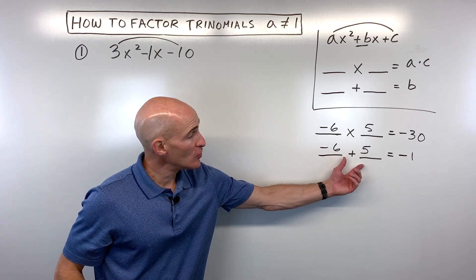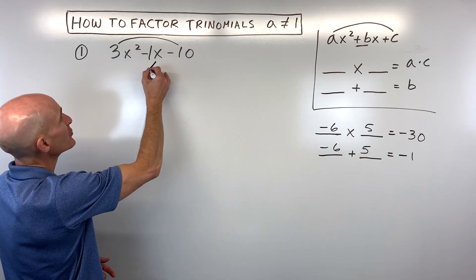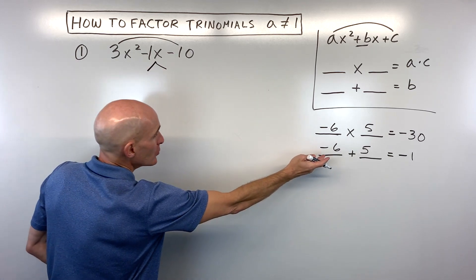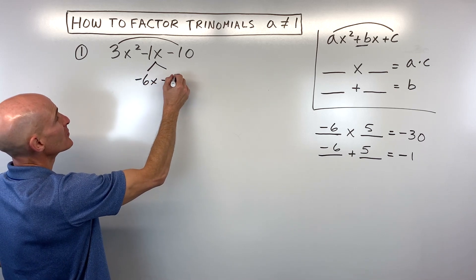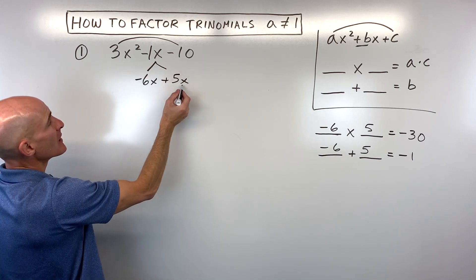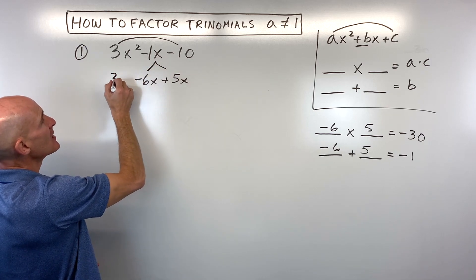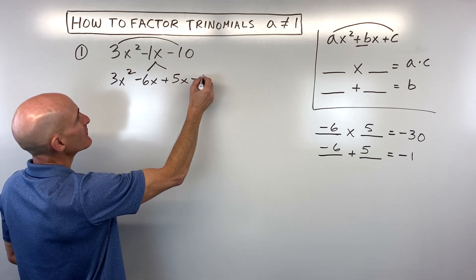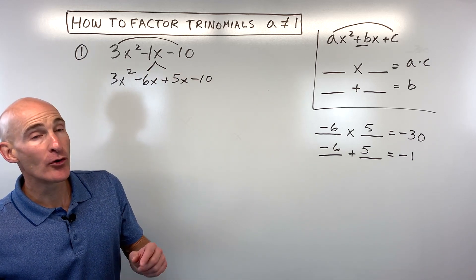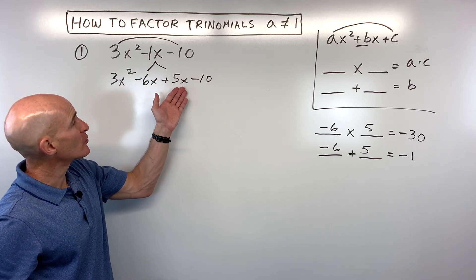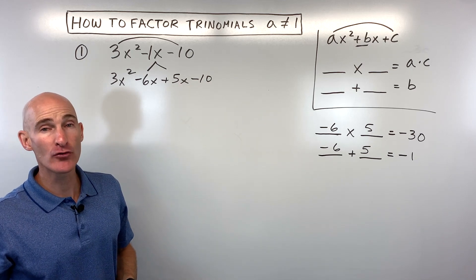Once you find these two numbers, you take this middle term and split it into negative 6x plus 5x. Remember to include the variable x. If you add these together, they give back the negative 1x, so we're not changing the problem — we're just splitting the middle term into two parts. Now notice we have four terms. When you have four terms, you try the method called factoring by grouping.